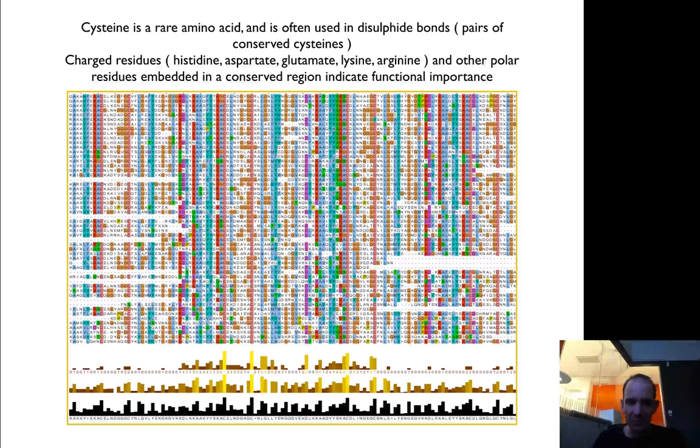You can sometimes see if they have conserved cysteines. As you see here in the middle, they have two conserved cysteines. That could indicate that it's a disulfide bond between these residues.